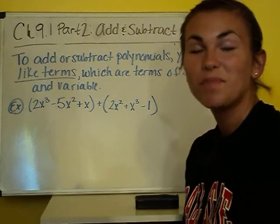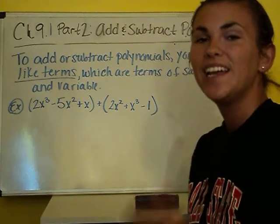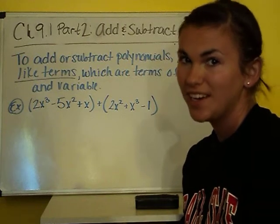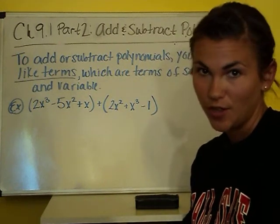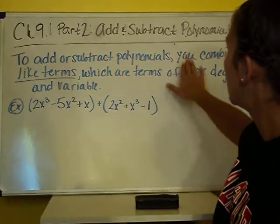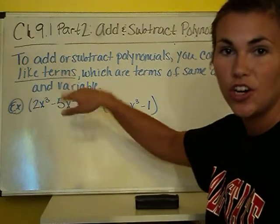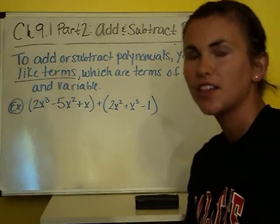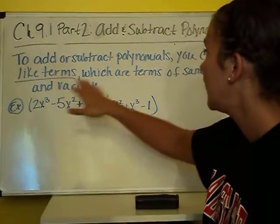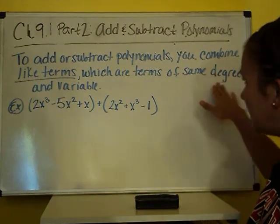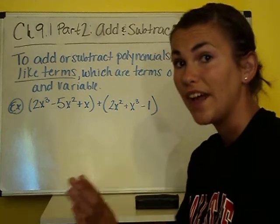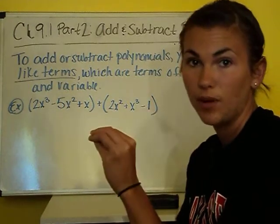Today is part 2 of section 1. Yesterday we learned exactly what polynomials and monomials were. Today we're going to learn how to add and subtract polynomials. To add or subtract polynomials, you combine like terms. Like terms are terms of the same degree and variable — you need to be looking at the same letter and the same exponent.